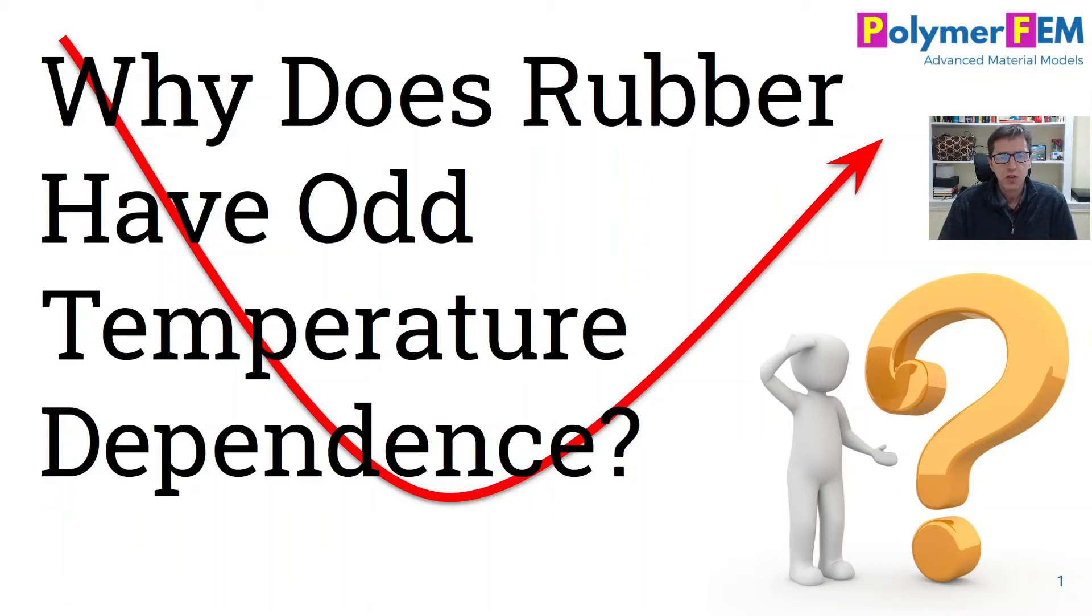Have you noticed that most materials soften as the temperature goes up, but not rubbers. Rubbers often actually get stiffer as temperature increases. So today I'm going to talk about what's causing rubbers to behave so unusual and odd compared to many other materials.